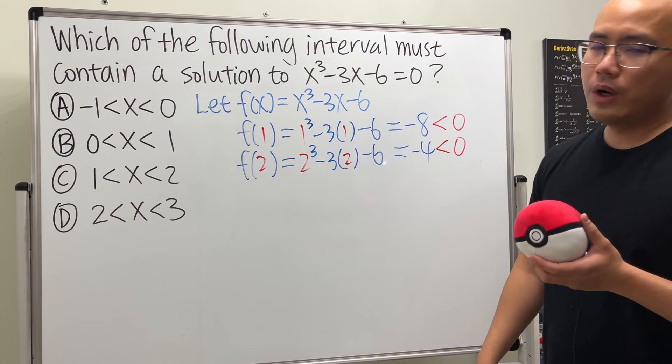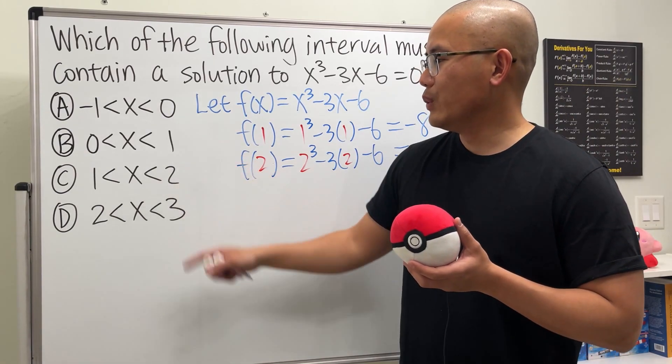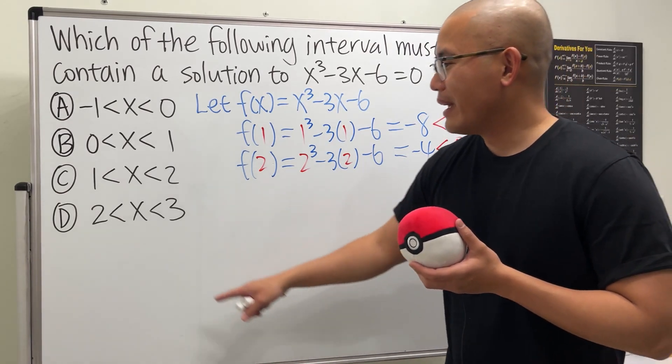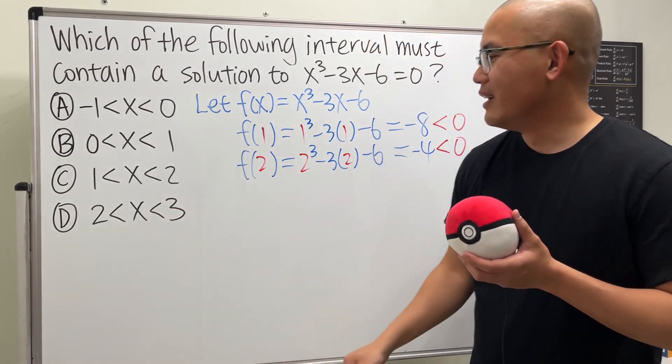So what do we do next? Well, we can choose B or we can choose D. And let me just go with D because I know the answer, of course. So I just have to go ahead and check when x is equal to 3.